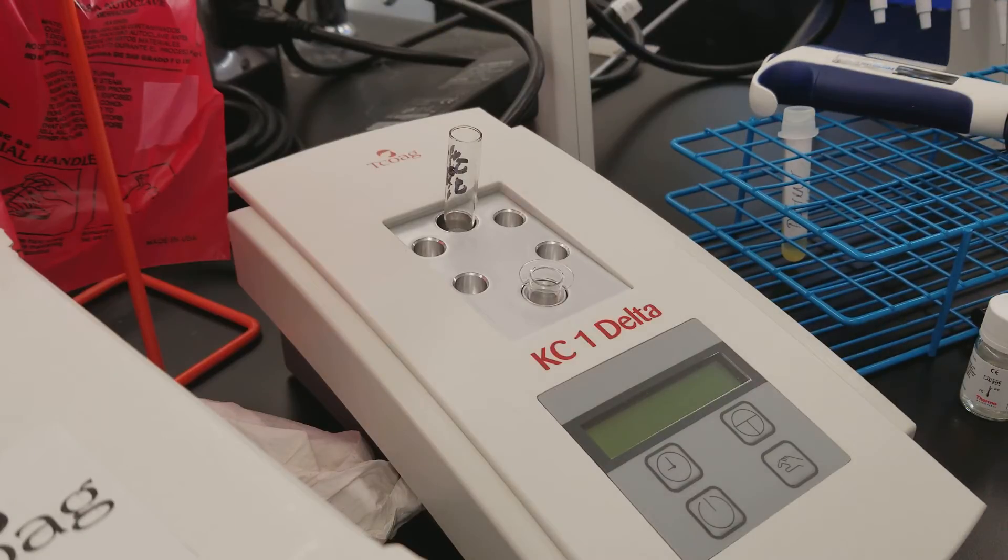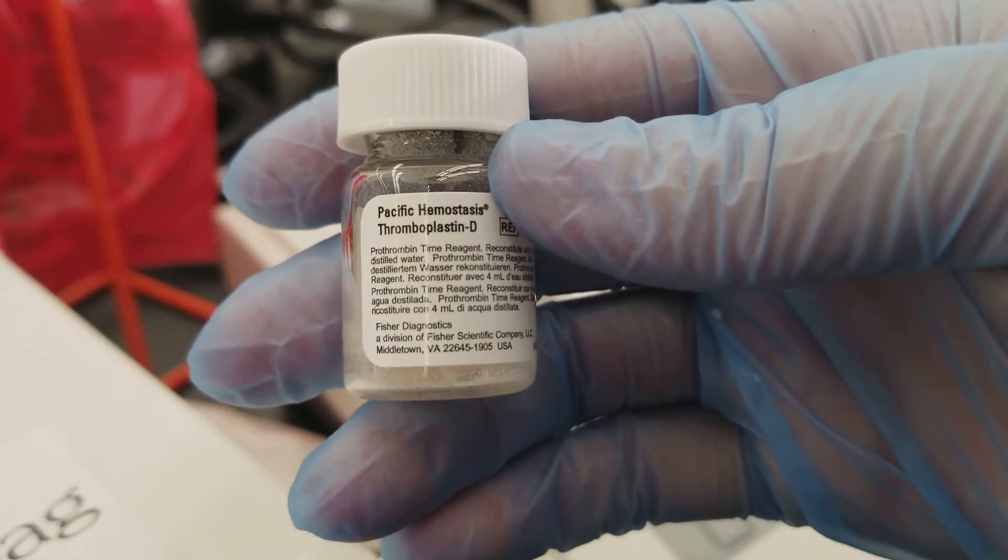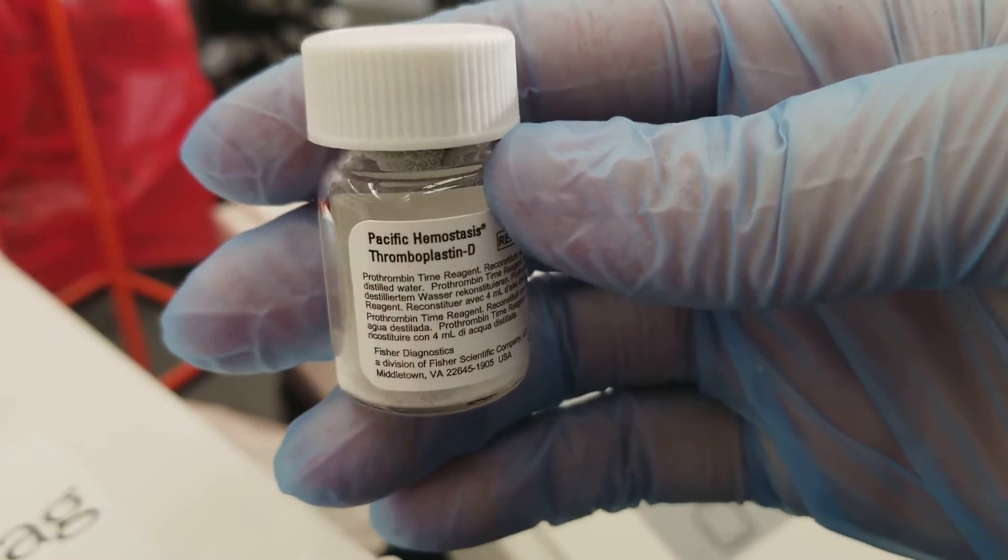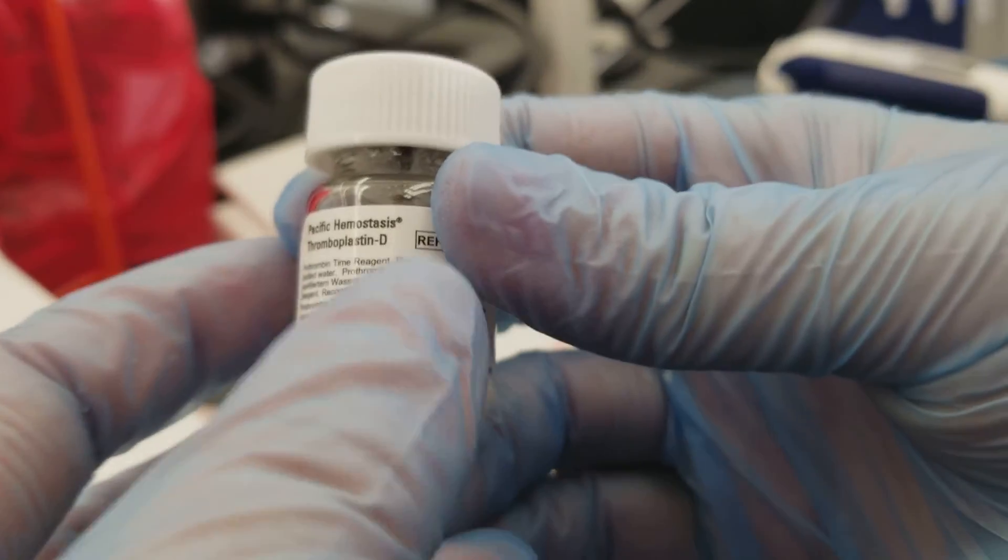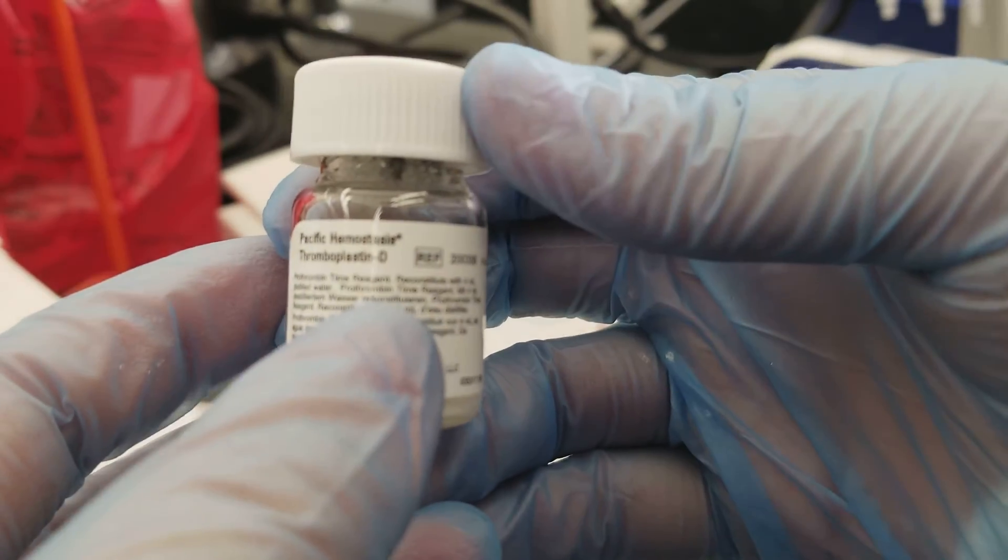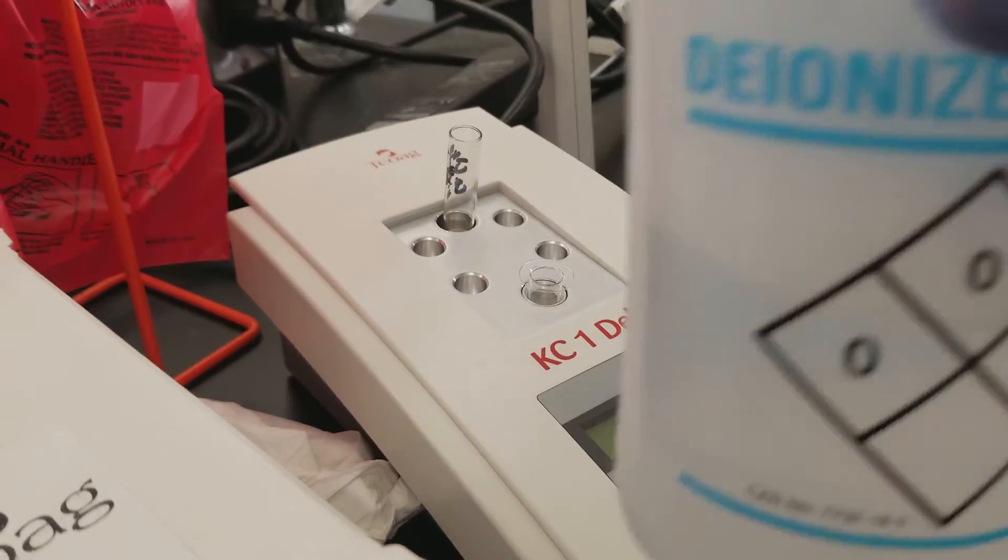Now, I'm setting up one of the reagents right now. This is the thromboplastin, and this is for the PT test. It requires you to put four milliliters of distilled water in there, and so we're using deionized water for this.